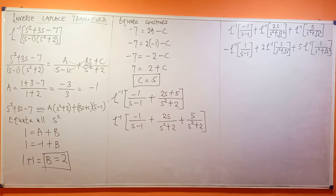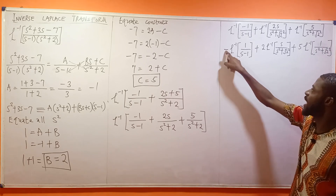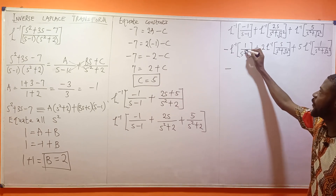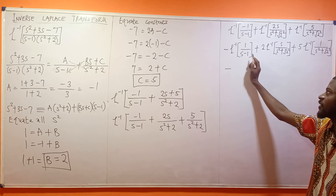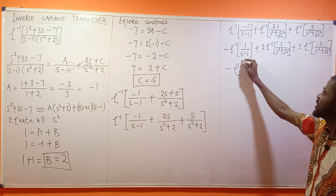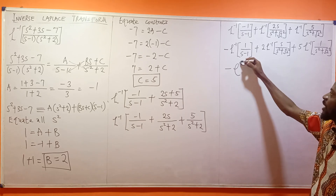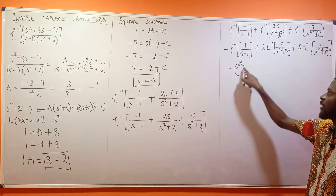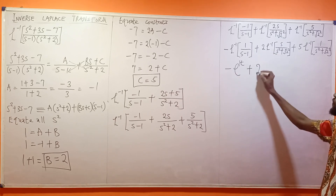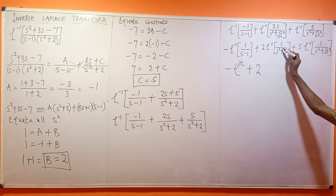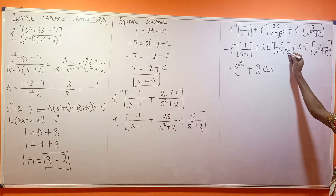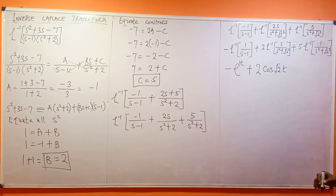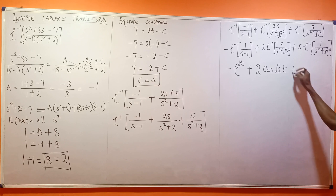Now we apply the formulas. For 1/(s - 1): the inverse Laplace is e^t. When we have s in the numerator over s² + a², that corresponds to cosine, so the inverse Laplace of s/(s² + (√2)²) is cos(√2 · t). So far we have: -e^t + 2cos(√2 · t)...